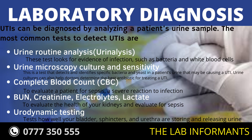UTIs can be diagnosed by analyzing a patient's urine sample. The most common tests done to detect UTI are urinalysis, which looks for evidence of infection such as bacteria and white blood cells, and urine microscopy, culture and sensitivity, which detects and identifies specific bacteria in a patient's urine that may be causing a UTI. Urine culture and sensitivity can also help a doctor determine the best antibiotic for treating a UTI.